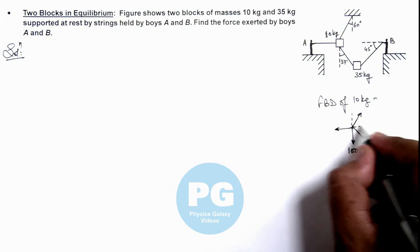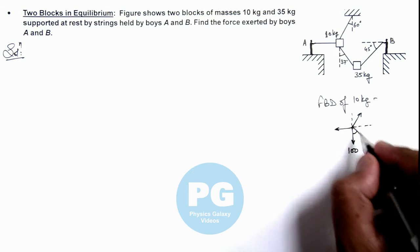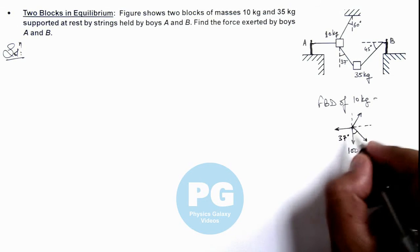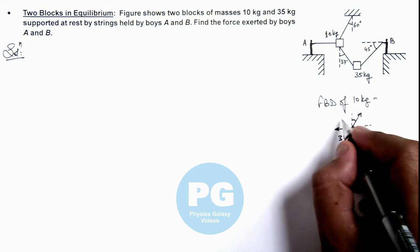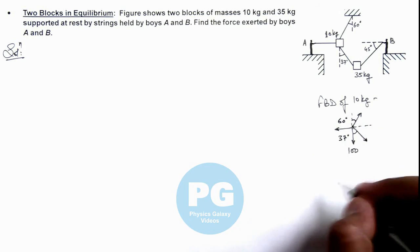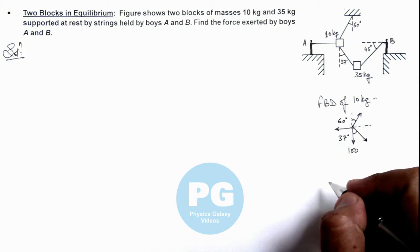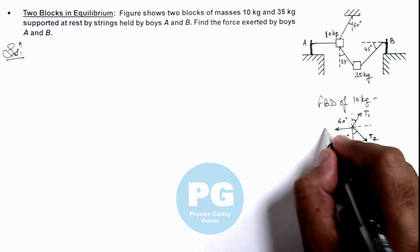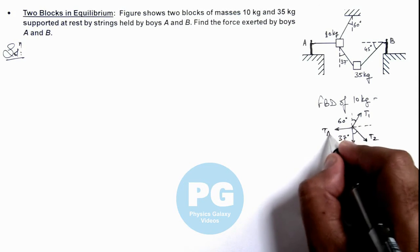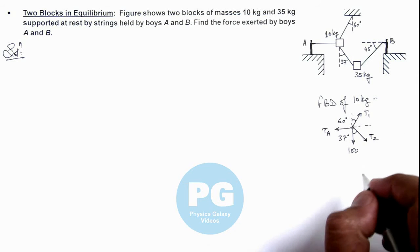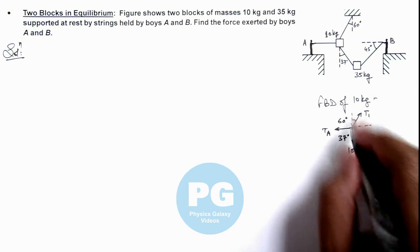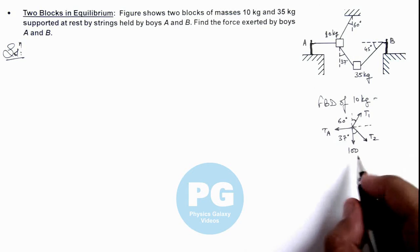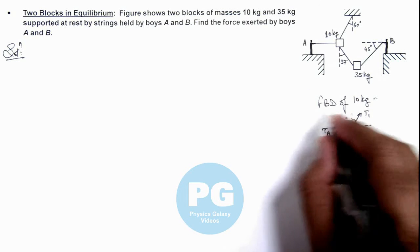Here we can see this angle is given as 37 degrees and this angle is 60 degrees. If we take this tension as T1, this as T2, and this as T_A, we can simplify the situation by resolving and balancing all forces, because the block of 10 kg is at rest.